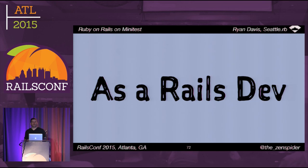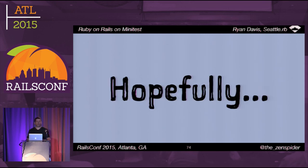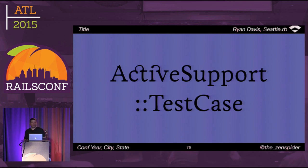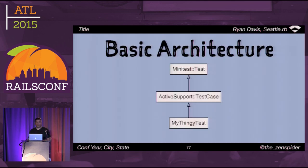Aaron Patterson and I keep things in sync and he lets me know when things are coming down the pipe. As a Rails dev, hopefully if I've done my job right it means nothing — you shouldn't even have to see Minitest most of the time, unless you want to enhance it with some plugins. That's because you're subclassing Rails's test cases like ActiveSupport::TestCase or ActionController::TestCase — there are about six of them.